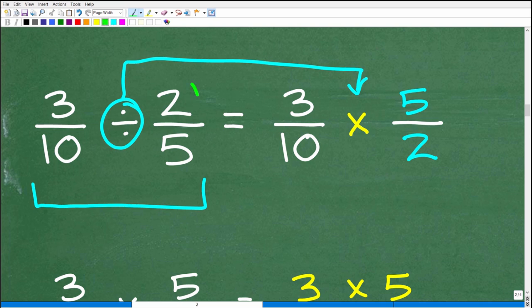Okay, so here we have 3 tenths divided by 2 fifths. So this is a division problem right here. What we're going to do is change this into multiplication. So how do we do that? Well, what we do is we take the fraction to the right of the division symbol. So here's the division symbol. This is the fraction to the right. And we're going to flip it upside down. That's called the reciprocal. So here we have 2 fifths. We're going to flip it upside down. That's 5 over 2. Okay, but when we flip it upside down, we get to change this division operator to multiplication.